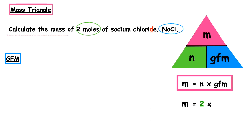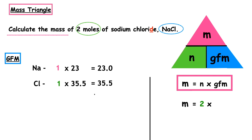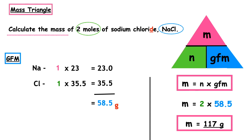The gram formula mass is the mass of one mole of the substance. For NaCl: sodium — 1 × 23 = 23; chlorine — 1 × 35.5 = 35.5. Adding these up gives a GFM of 58.5 g/mol. Substituting into our formula: mass = 2 × 58.5 = 117 grams.